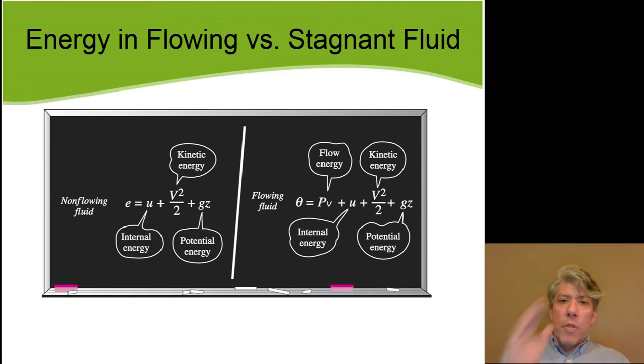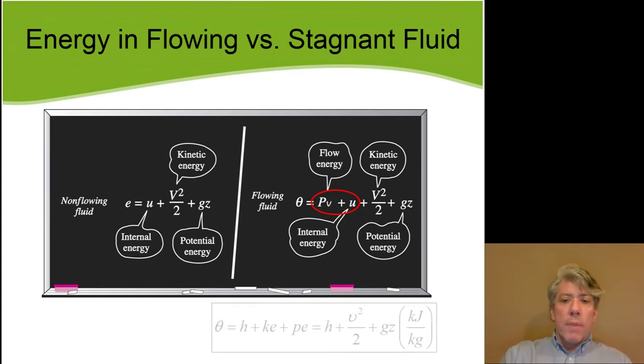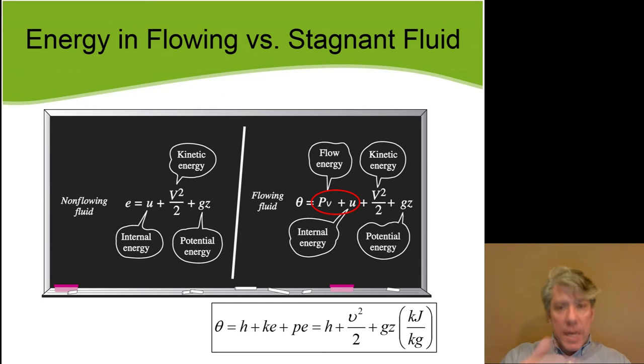So, we'll use the symbol theta for the specific energy of a flowing stream, and E for the specific energy of a non-flowing stream. And, of course, it's worth noting that that PV plus U term can be replaced by enthalpy, H, because that's what enthalpy was made for, was for this flowing fluid. So we could write theta instead of PV plus U with the other terms. We could write it as the enthalpy plus the kinetic energy plus potential energy, which I've then broken out just like it is in the chalkboard diagram.